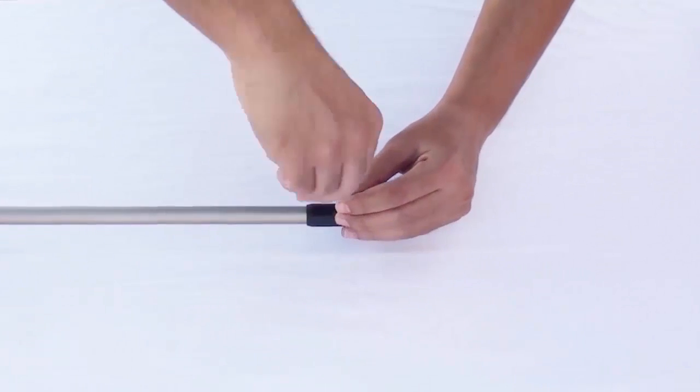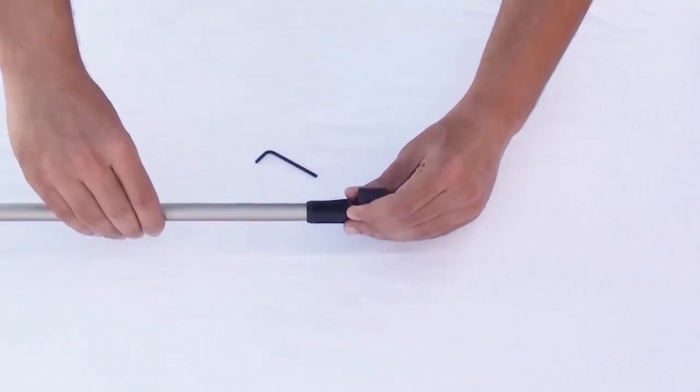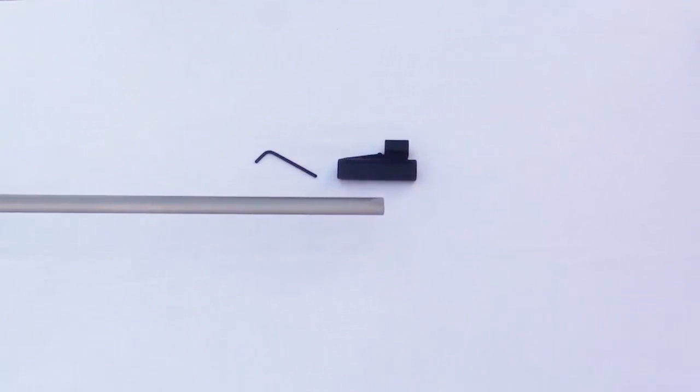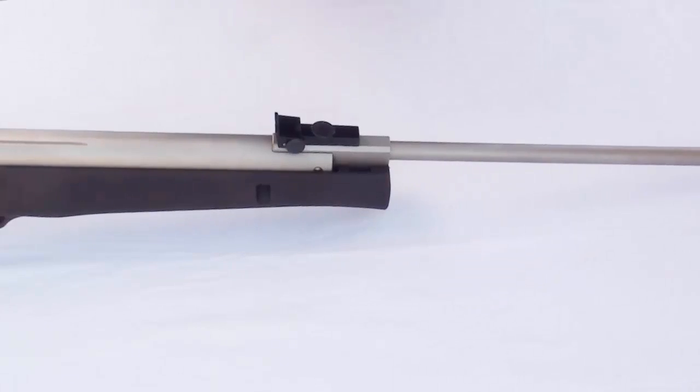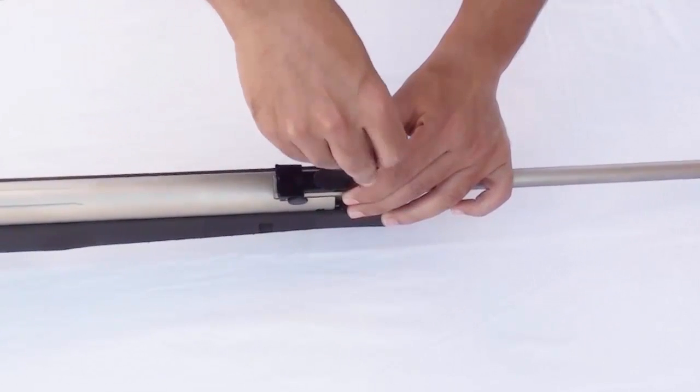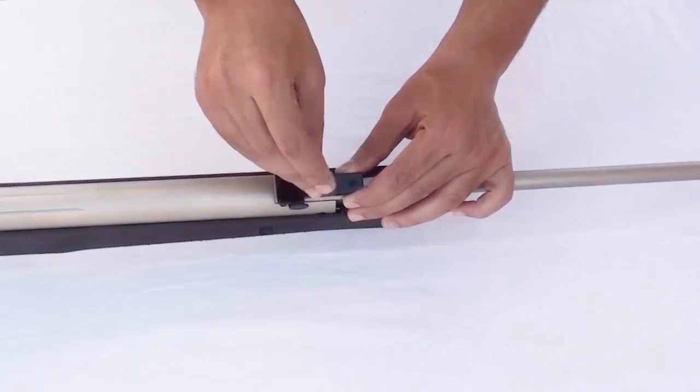Loosen the screw on the front side using a 2.5 millimeter Allen key and slide it off. Loosen the screws on the rear side using a 2.5 millimeter Allen key and remove it.